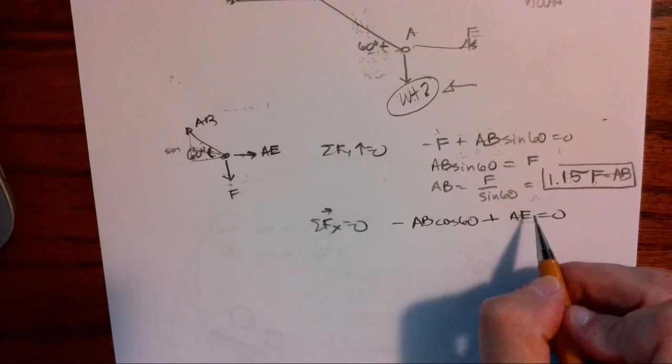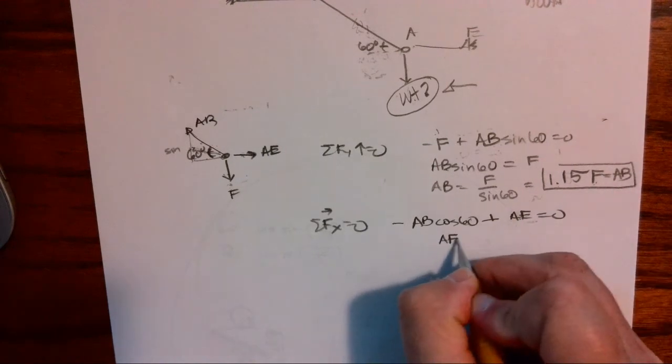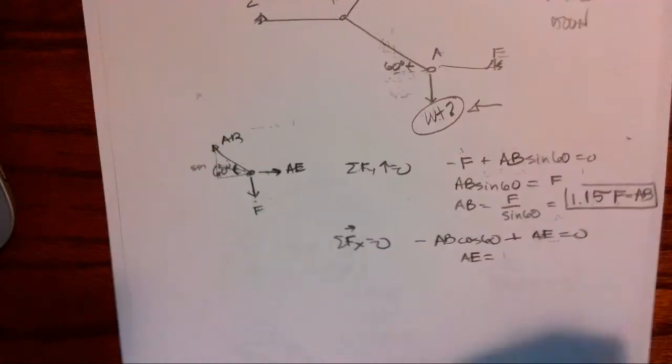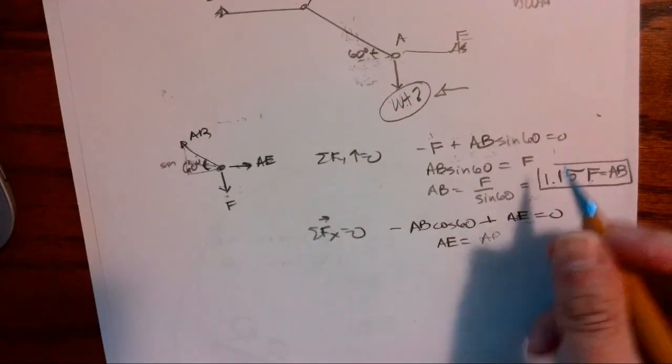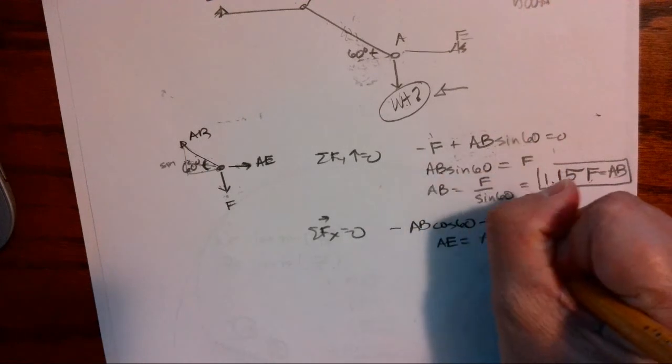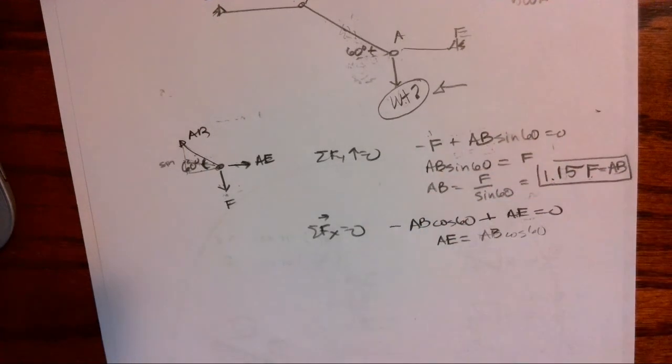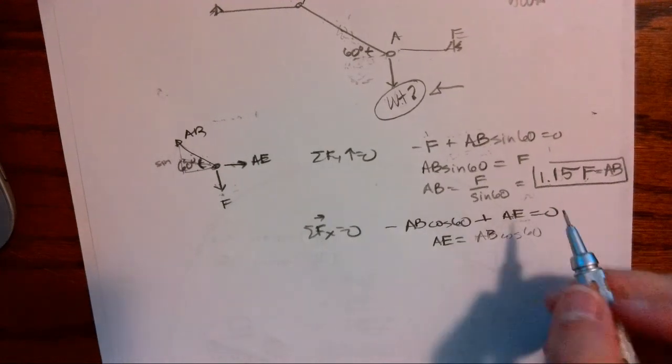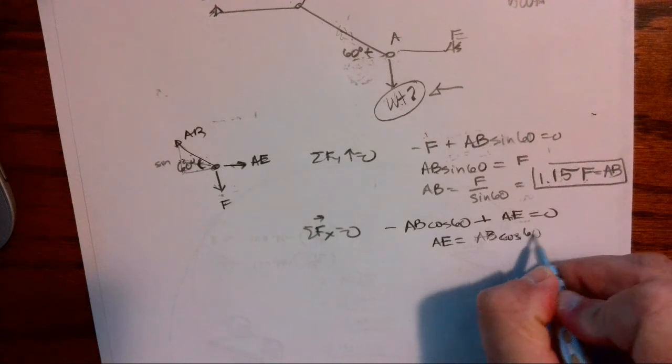And we are going to have minus AB in the X, cosine, cosine 60, plus AE equals zero. And I want to isolate that AE because I need to see its proportion. We have AB, AB cosine 60.